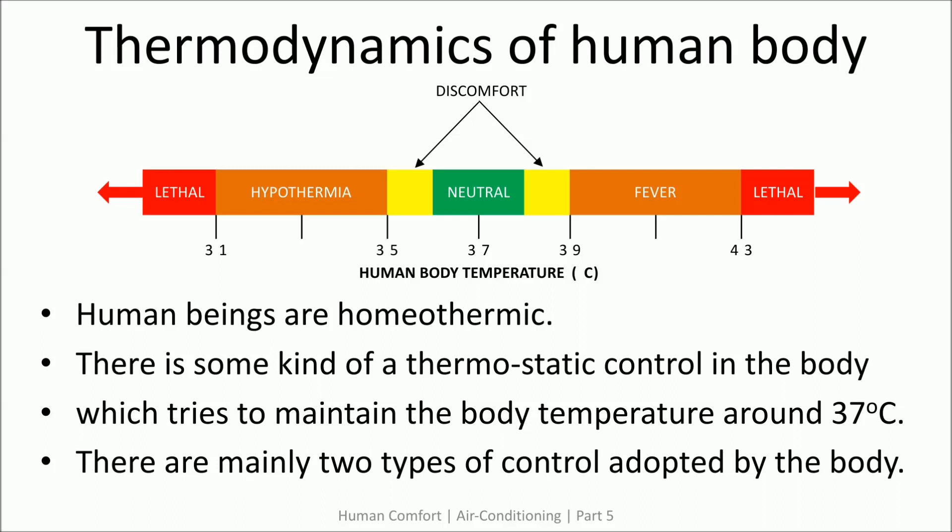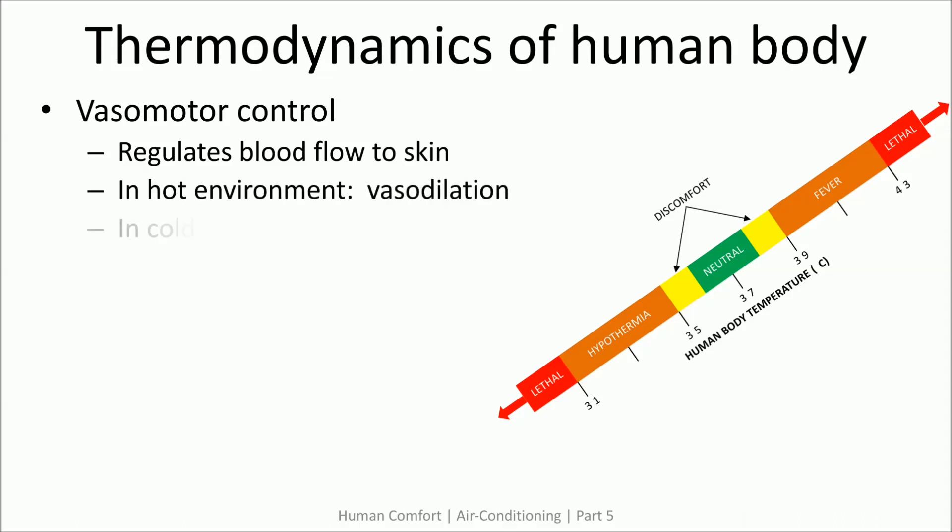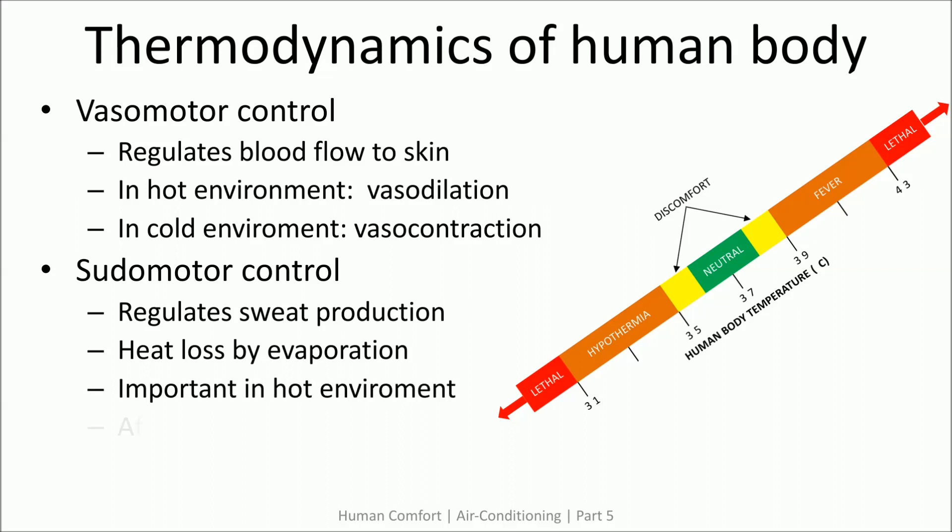When thermoregulation does not perform well, the effect may range from slight discomfort to being lethal. There are two mechanisms of temperature control in human beings. The first is vasomotor control: in a hot environment, blood vessels carrying blood to the skin dilate, increasing blood flow and heat loss by conduction and convection. In a cold environment, blood vessels contract, reducing blood flow to the surface and reducing heat loss — this is the reason for our pale appearance in winter. The second mechanism is pseudomotor control, which regulates sweat production and lowers body temperature by evaporative heat loss. Its effectiveness is limited in a humid environment where evaporation reduces.